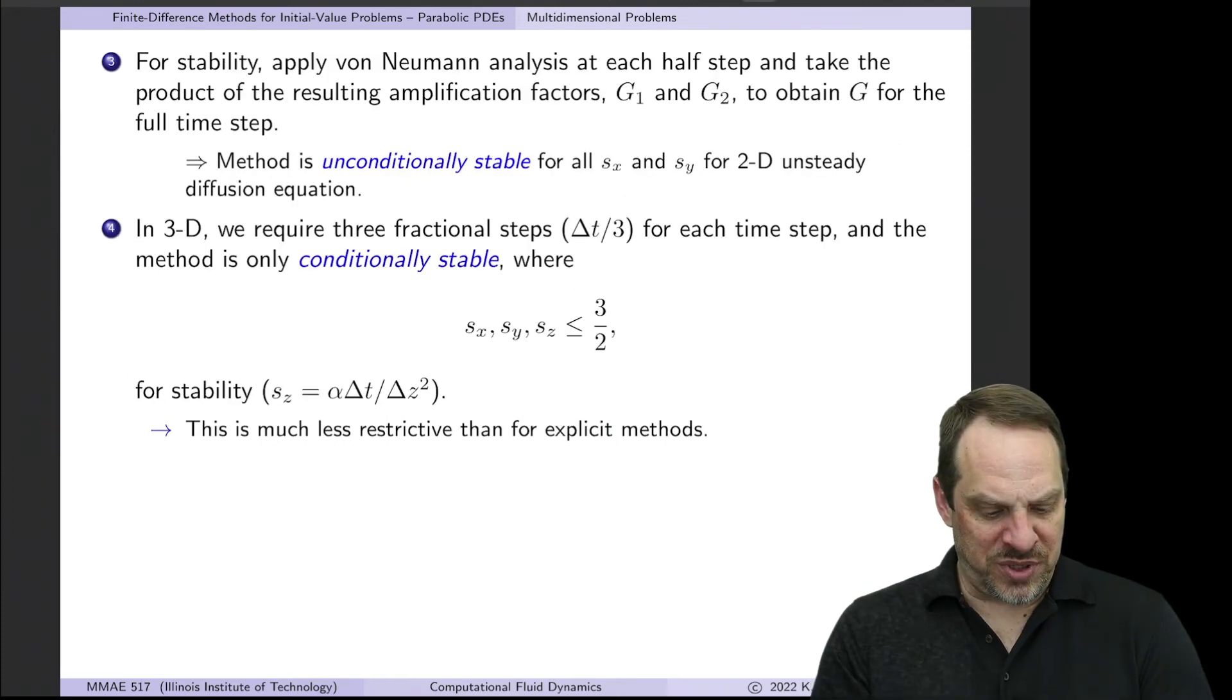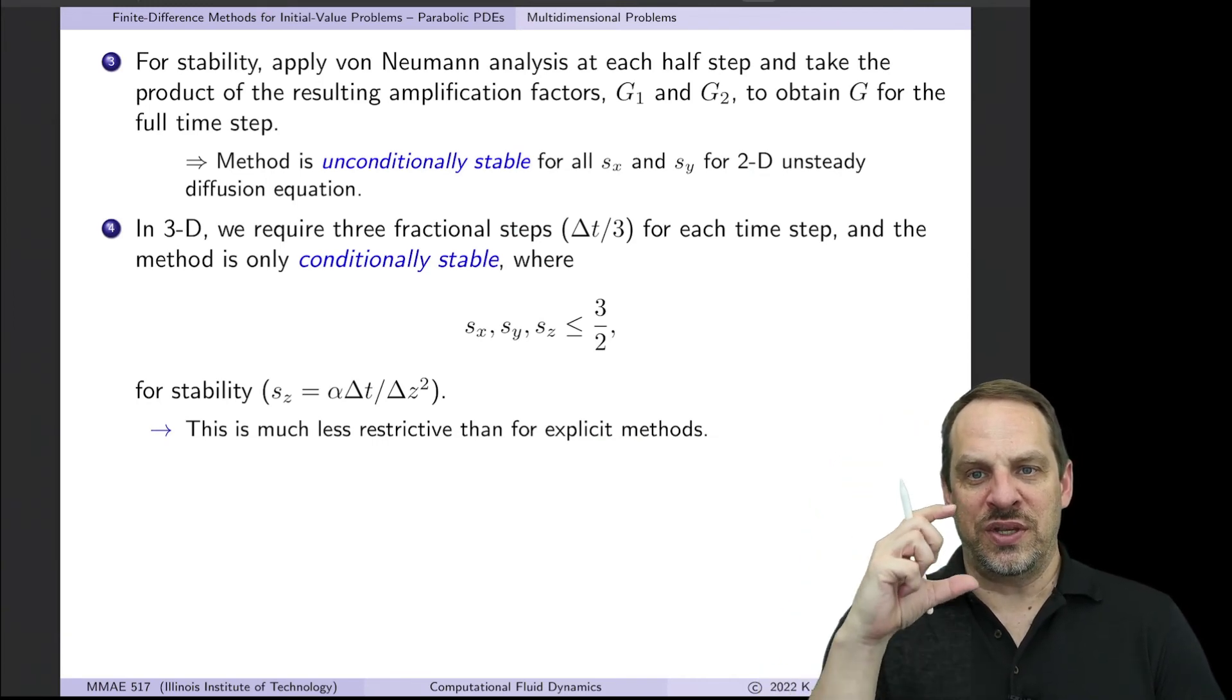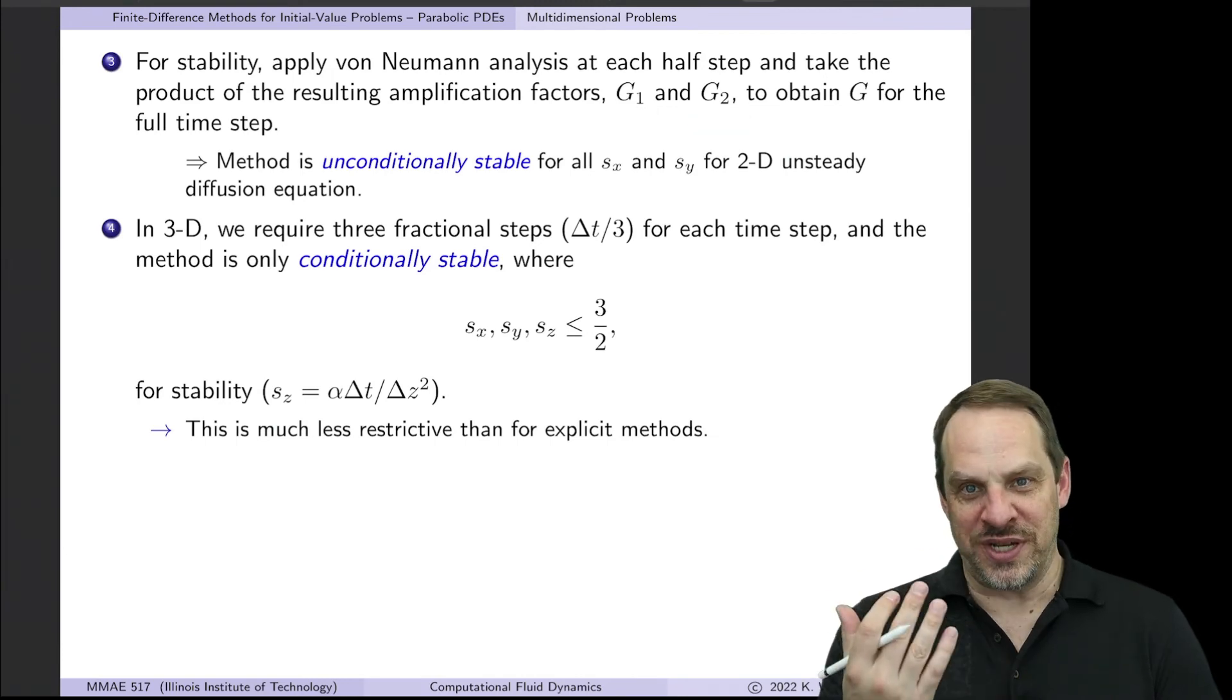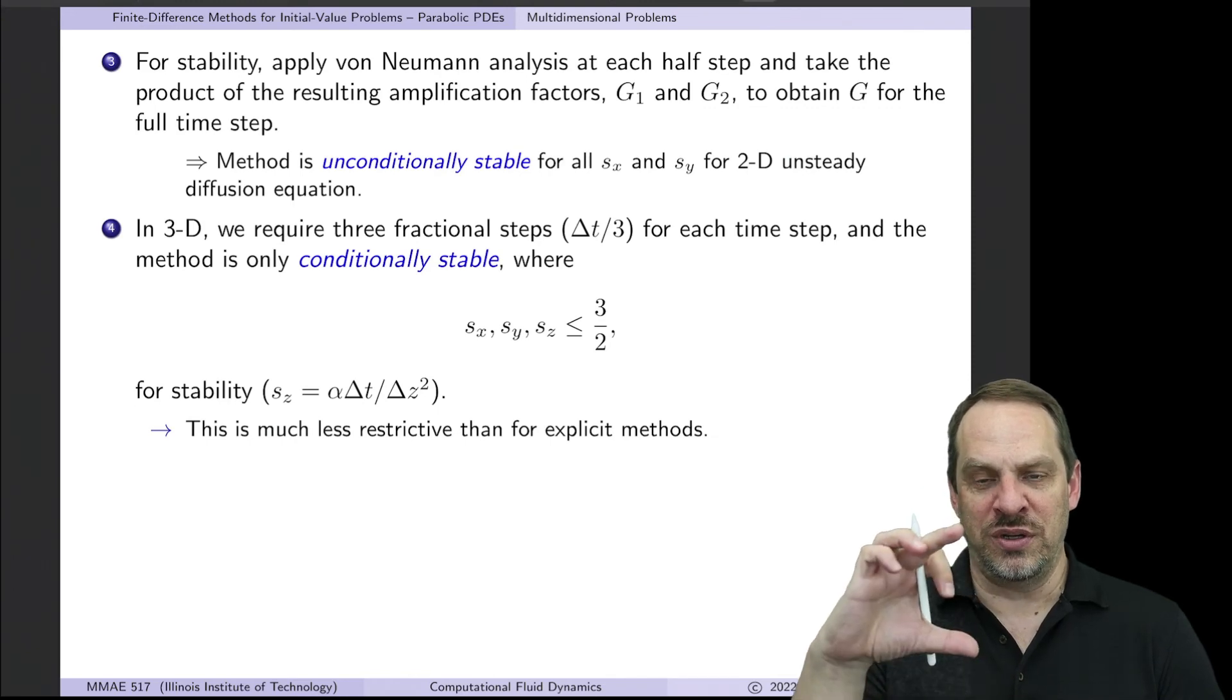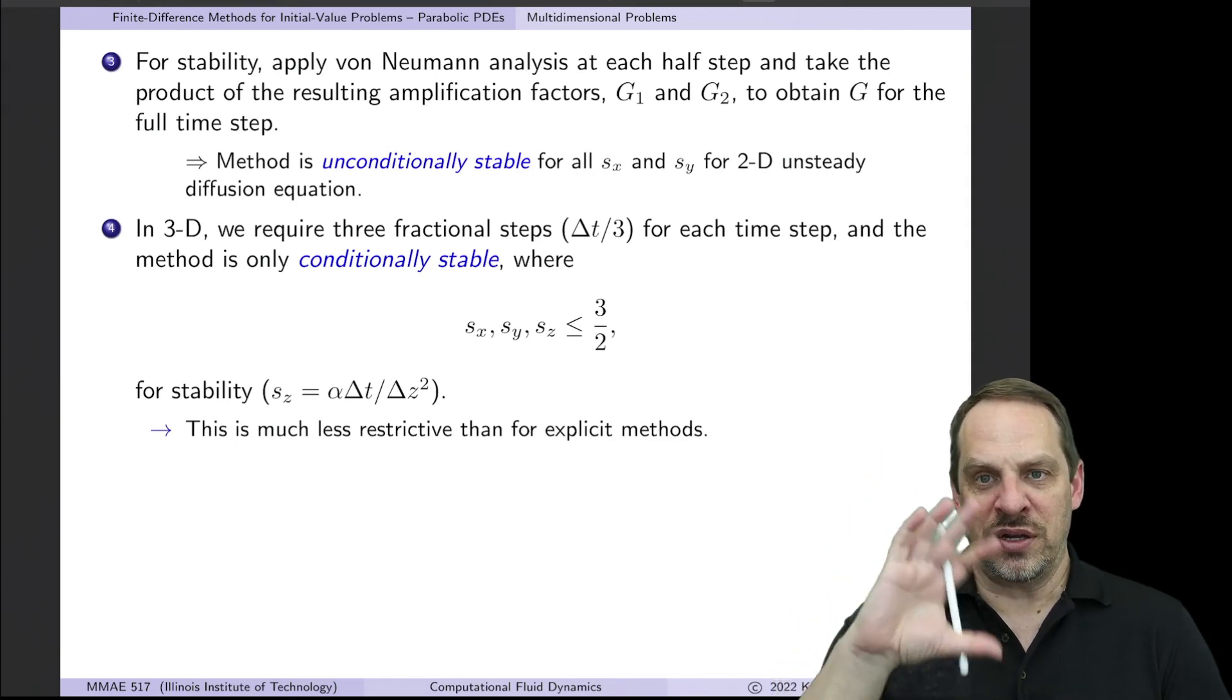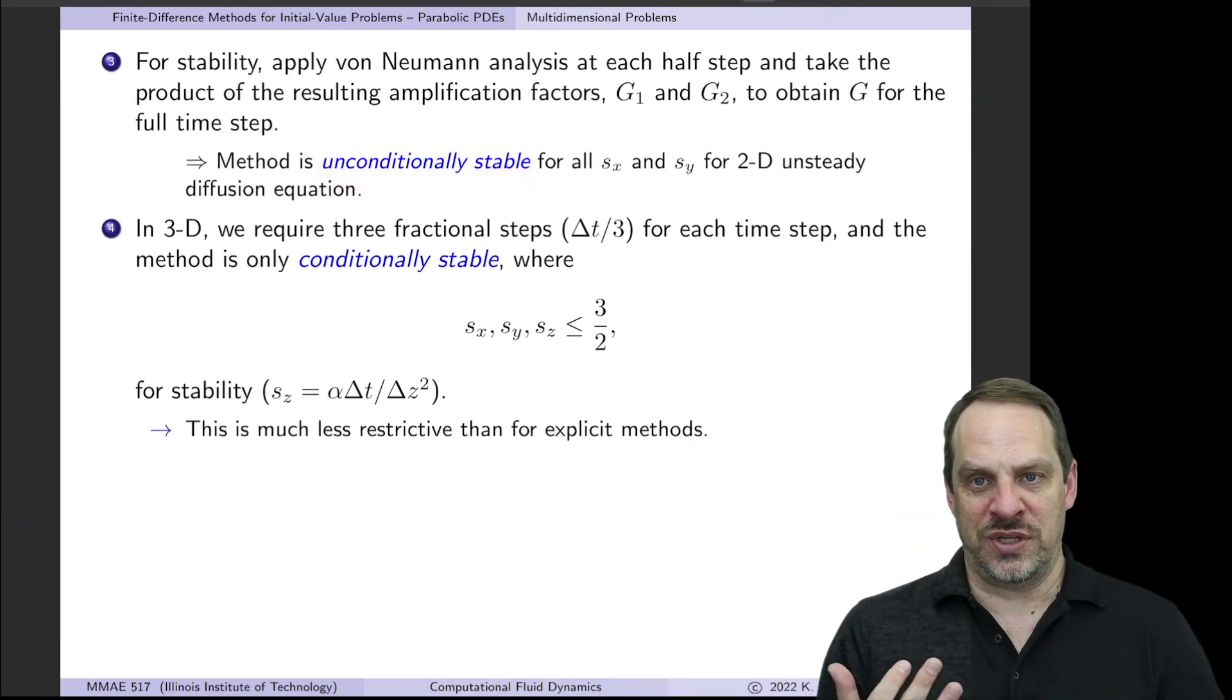Now if you do a von Neumann stability analysis on this, because we're taking two half time steps for a full step, we need to get the gain for each of those half time steps. So you can think of those as g1 and g2. So it's double the analysis. A lot of it's the same, but still it's double the analysis to get the g1 for the first half time step, and the g2, the gain for the second half time step. And then the product of those two gives the g for the entire time step. It turns out to be unconditionally stable for all values of delta t. So this is good. Obviously that's the best case we could hope for.